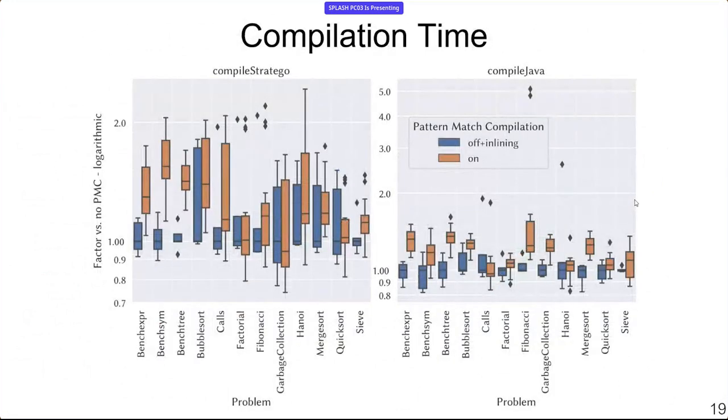Of course, there are some costs to compilation time. Here again, blue is the normal Stratego compiler and orange is the optimization that is on, which is always taking a bit of extra time. Although as you can see from the blue boxes, the Stratego compiler is a bit noisy in how long it takes, so it's a bit hard to make conclusions. But sometimes we can get in the range of one and a half times slowdown when we turn on the optimization. On the right hand side, there is the Java compiler, which we also benchmarked since we do cause some code duplications at some point.